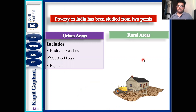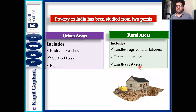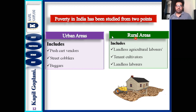Urban poor include pushcart vendors, street cobblers, and beggars. Rural poor include landless agricultural laborers and landless laborers. These have been given so that you can understand poverty in two scenarios: first, urban poverty, and second, rural poverty.